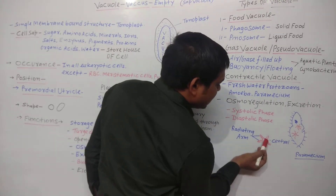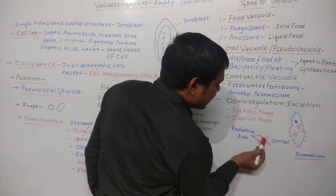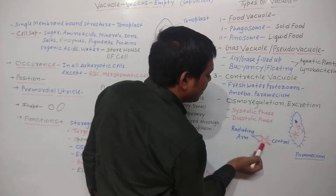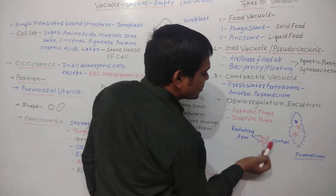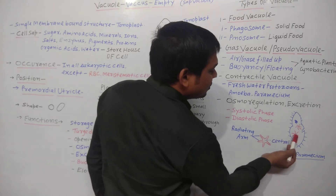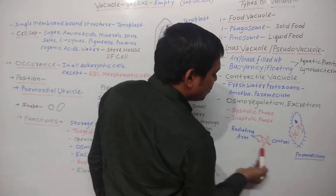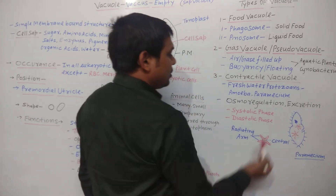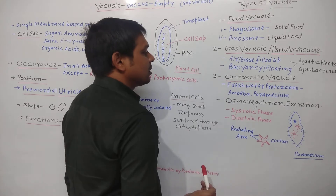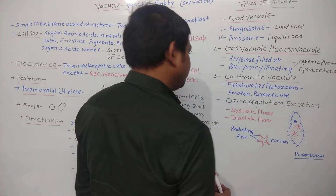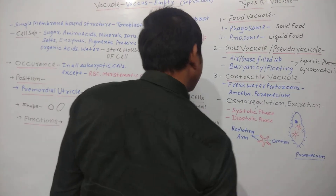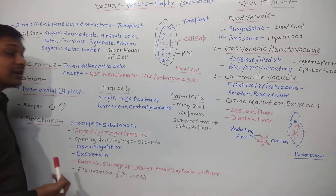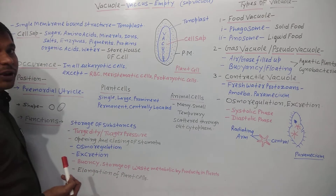The contractile vacuole in paramecium has a central vacuole with radiating arms — that is what contractile vacuoles actually look like. Now we look at the different functions of the vacuole.